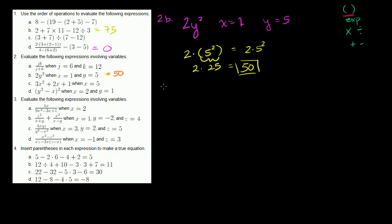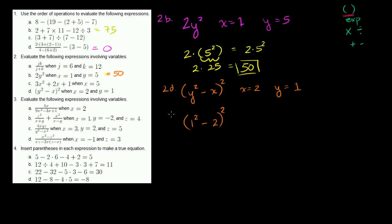Problem 2d: evaluate (y² minus x) whole squared, where x equals 2 and y equals 1. Substituting: (1 squared minus 2) squared. 1 squared is 1, so we get (1 minus 2) squared, which is (negative 1) squared, which equals positive 1. Negative times a negative is a positive, so the answer is 1.